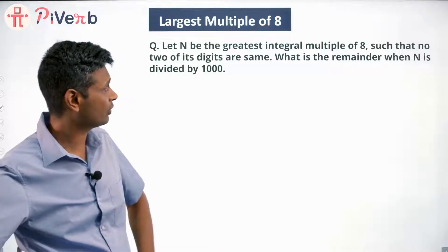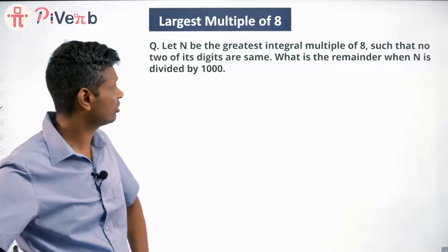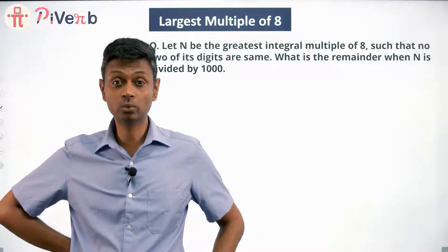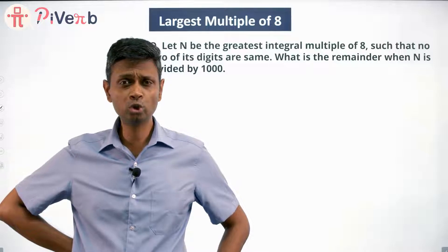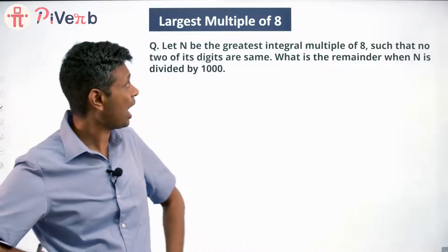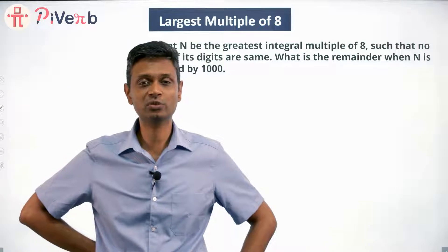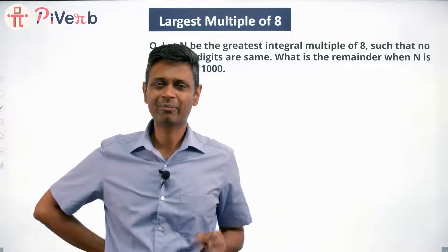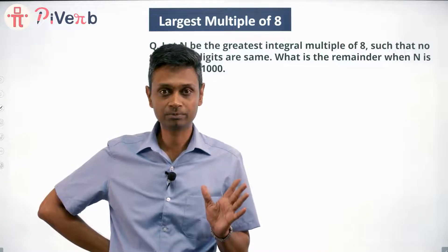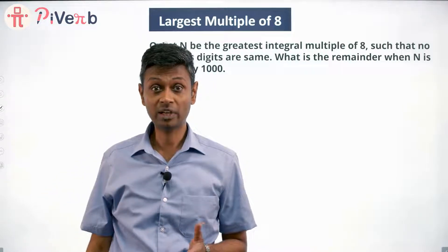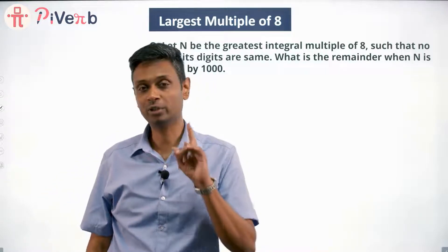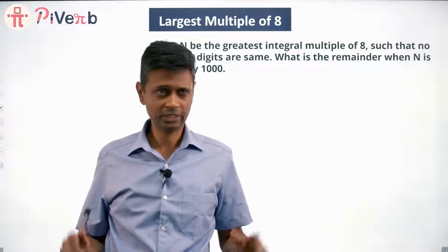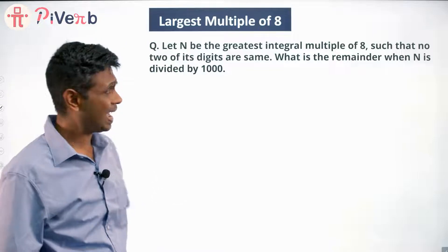Greatest integral multiple of 8 such that no two of its digits are the same. So no digit can repeat. It should be as large as possible. First of all, there are 10 digits, so this number can maximum be a 10-digit number. It cannot be an 11-digit number — if you have 11 digits, at least one digit has to repeat. So we're looking for a 10-digit number, and we want it to be as high as possible.